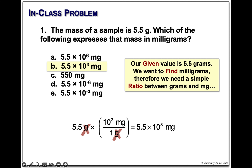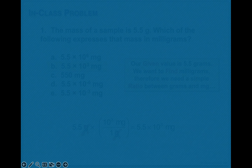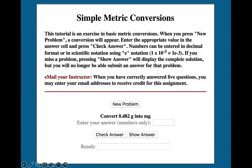I'm sure everybody wonders where I get my exam questions. It's very simple — for this one I just go to metric conversion, hit new problem until I get one that I like. This is grams to milligrams, basically multiplied by 1,000.